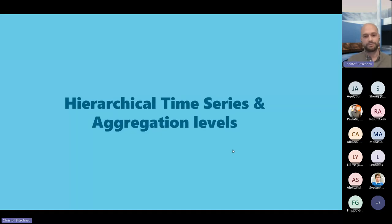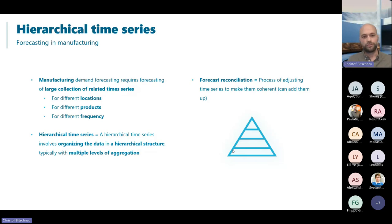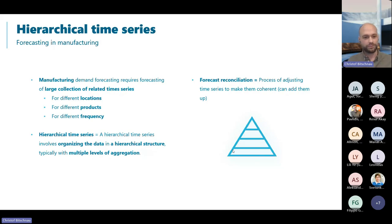Now let's step back and look at hierarchical time series and aggregation levels. What aggregation levels exist in manufacturing and how can different forecasting approaches be leveraged? Hierarchical time series means you can organize data in a hierarchical structure with multiple aggregation levels. For methods forecasting multiple levels, forecast reconciliation processes exist to ensure a coherent forecast across all levels.